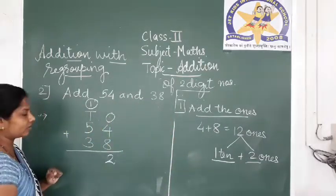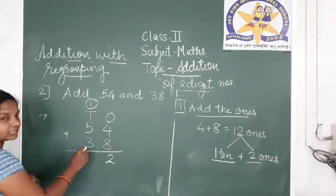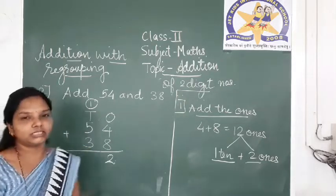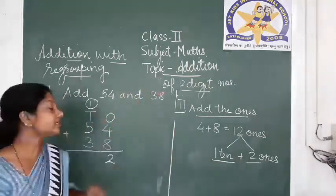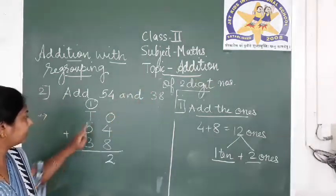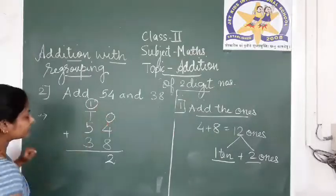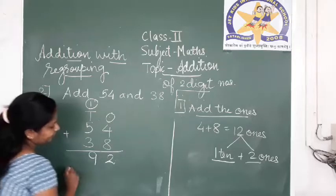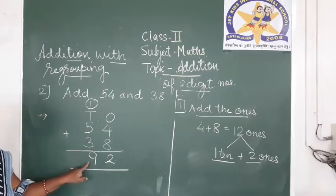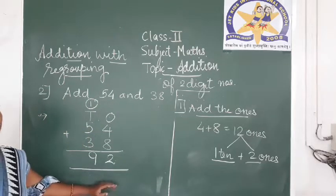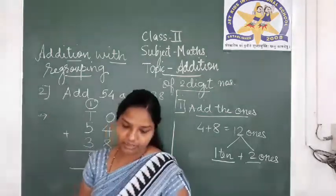This 1 ten should be written or carried to the tens column, and 2 ones will be written in the ones column. Now add the tens: 5 plus 3. After 5, count 3: 6, 7, 8. It is 8. But the 1 which we carried must also be added, so 8 plus 1 is 9. The answer we got after adding both numbers is 92. This was addition with regrouping.